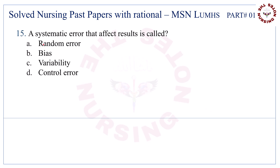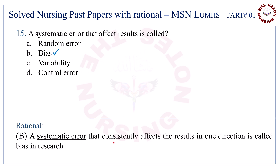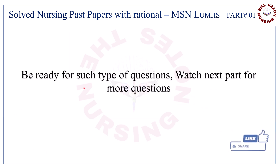Question number fifteen: a systematic error that affects results is called. Correct answer is B, bias. Be ready for such types of questions and watch the next part for more questions.